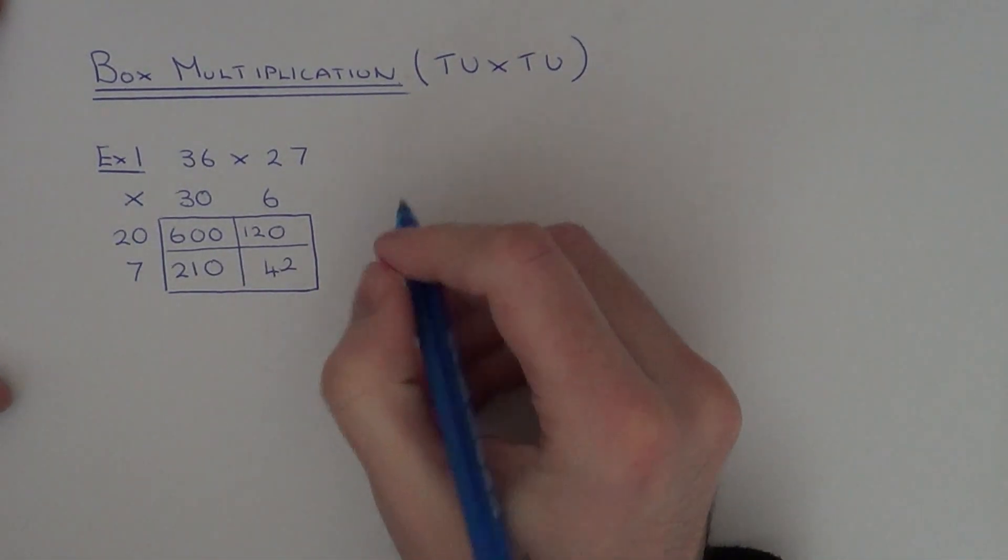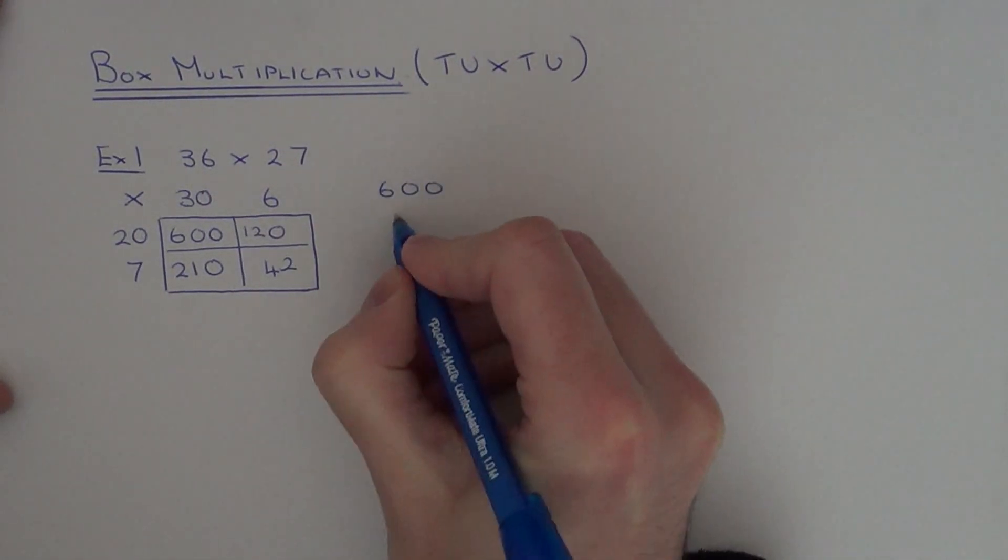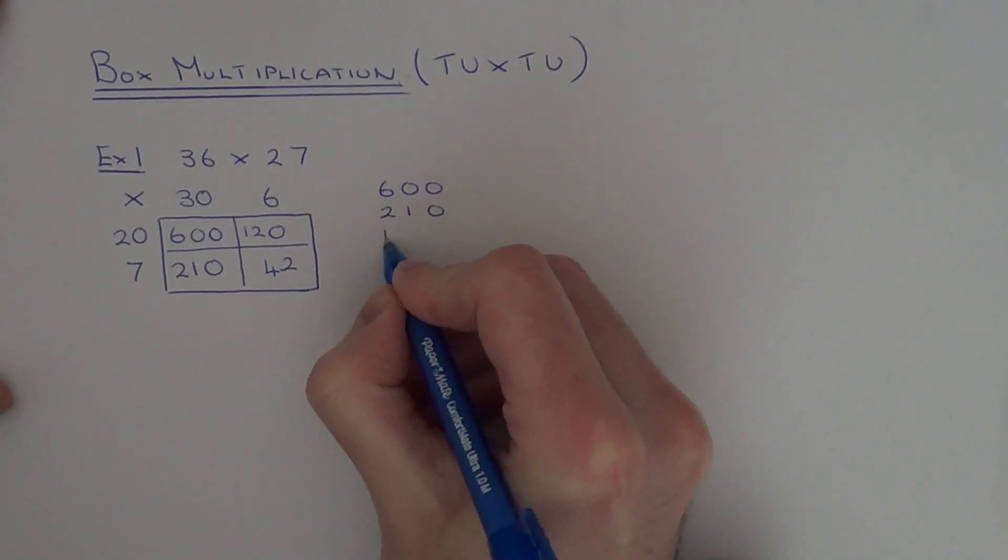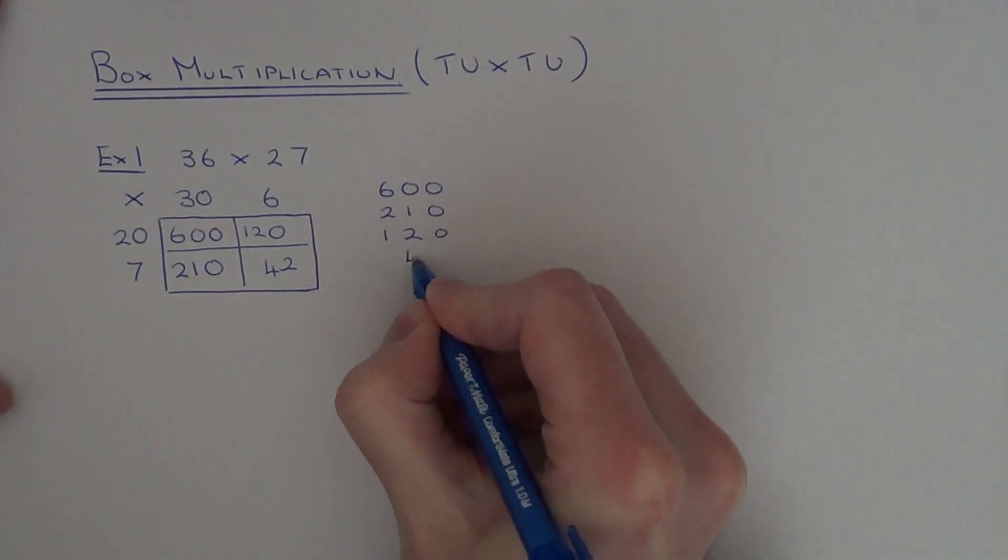Next is add these numbers up. So just add these up on the side of your page. So we've got 600, 210, 120, 42.